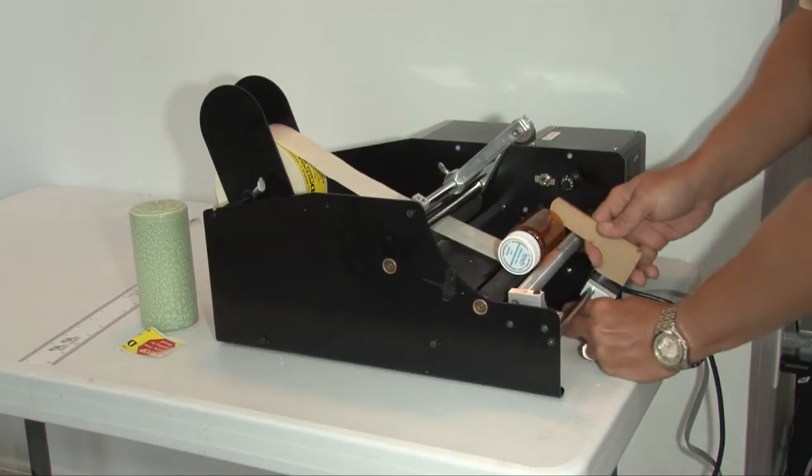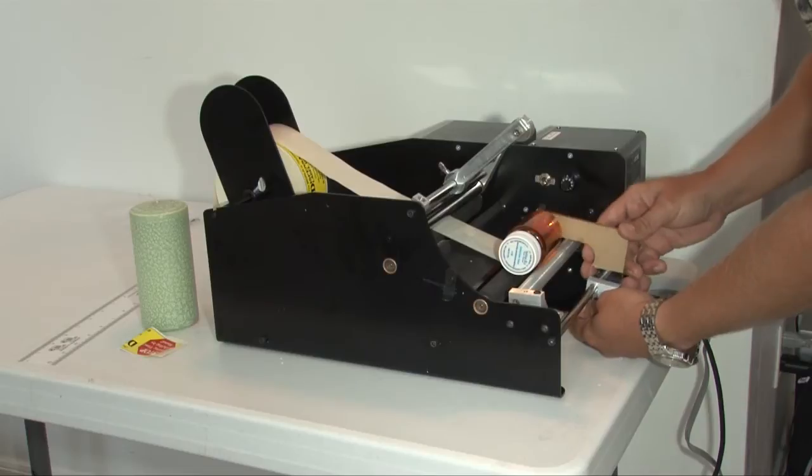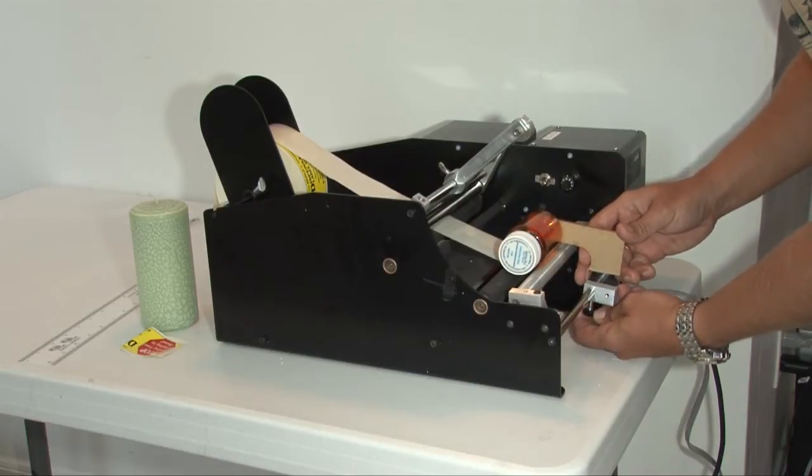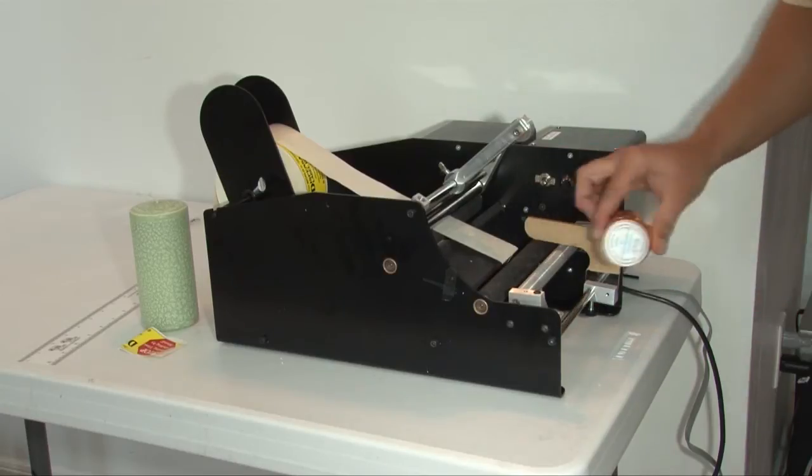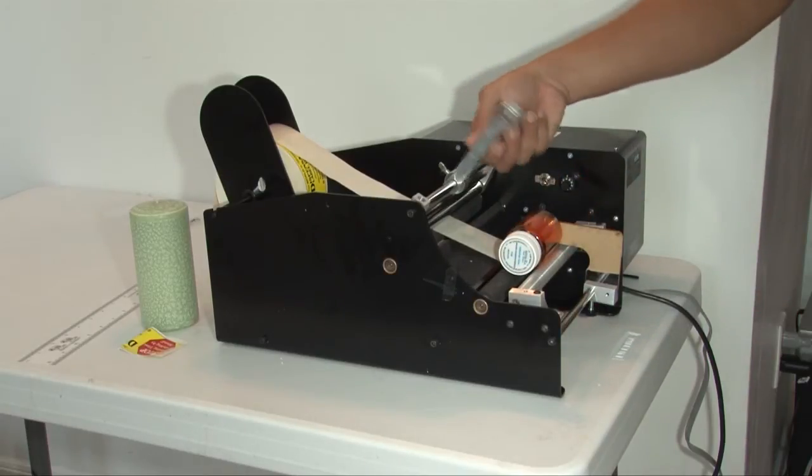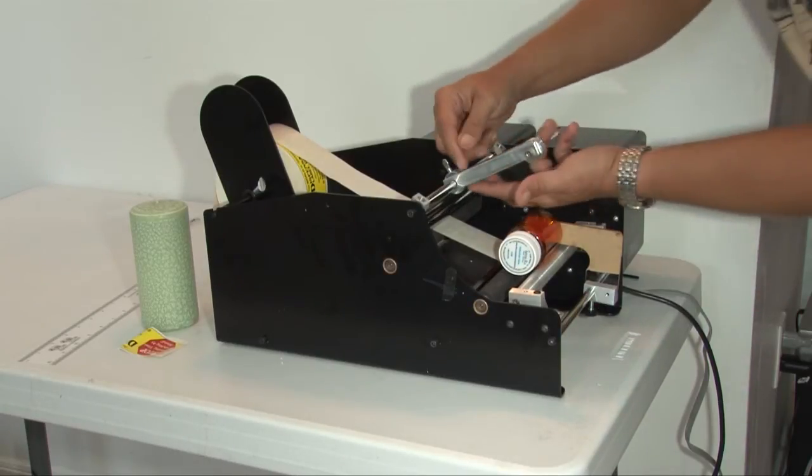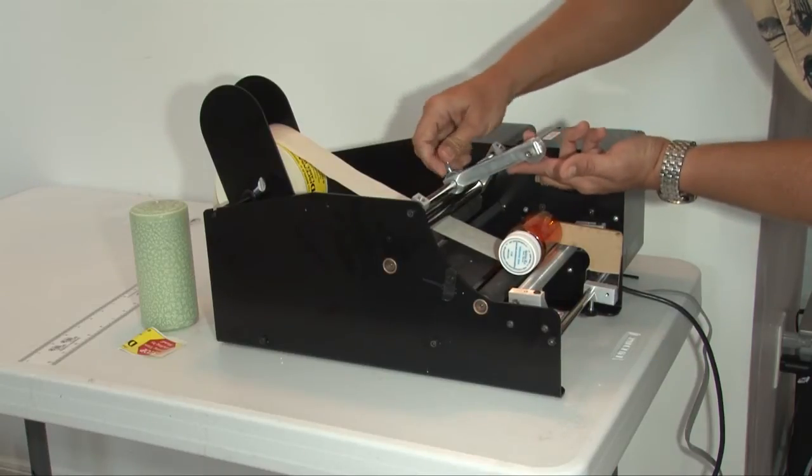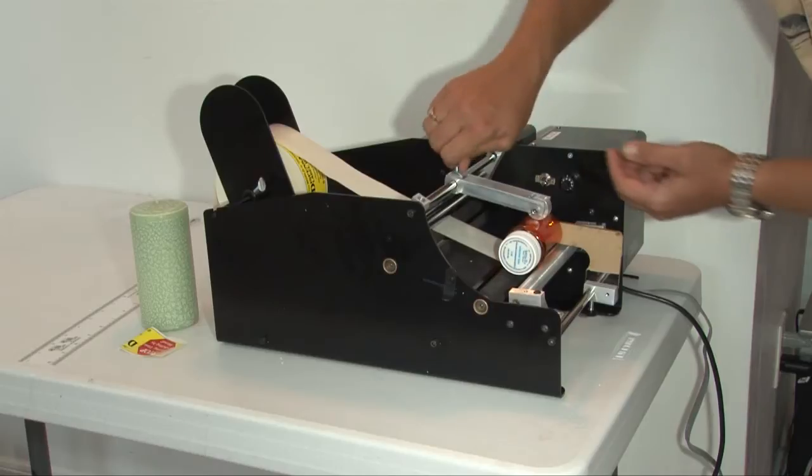Now we're going to adjust the guide against the bottom of the container once we have it placed where we want it. As you can see, the pressure arm is needed if we have an empty container, a plastic container. It doesn't have a lot of weight to it. We'll pivot it towards the bottle just to where it makes contact, then tighten the set screw.